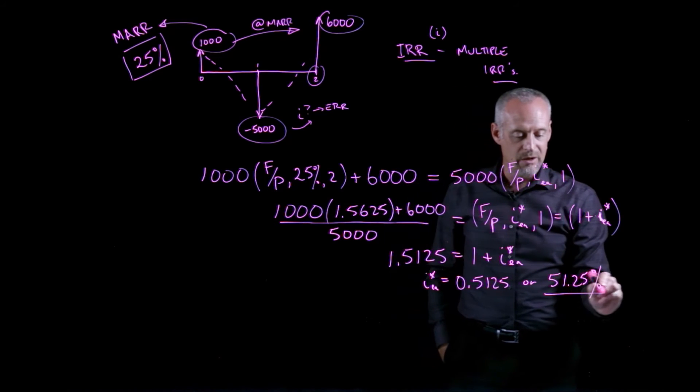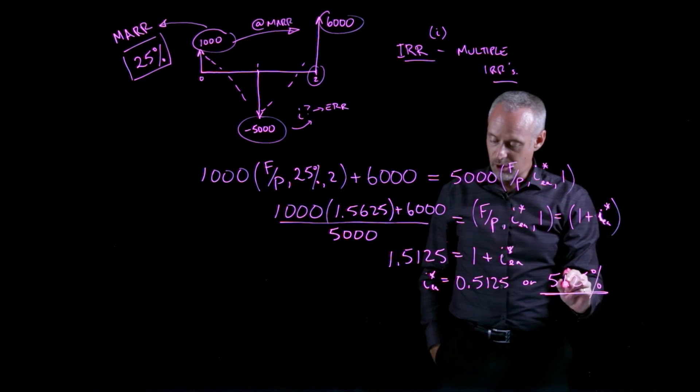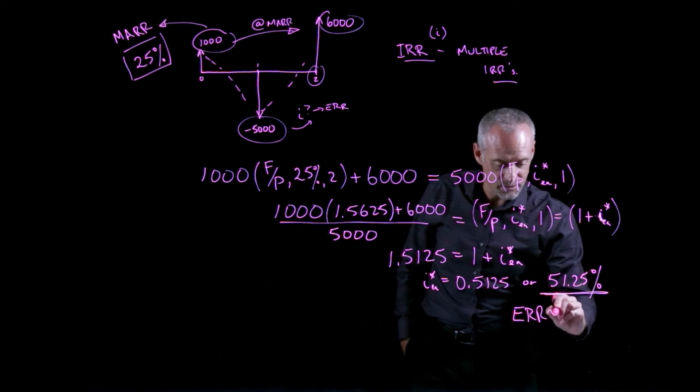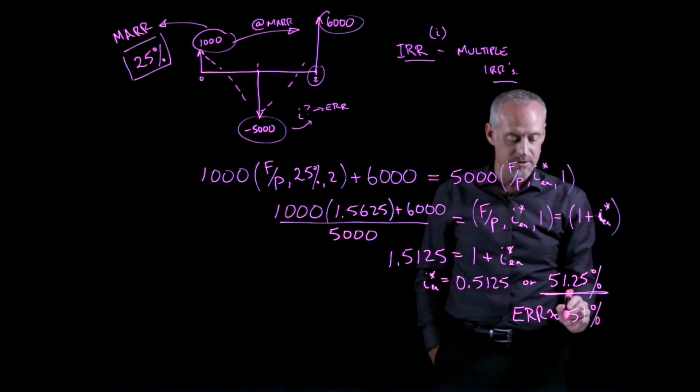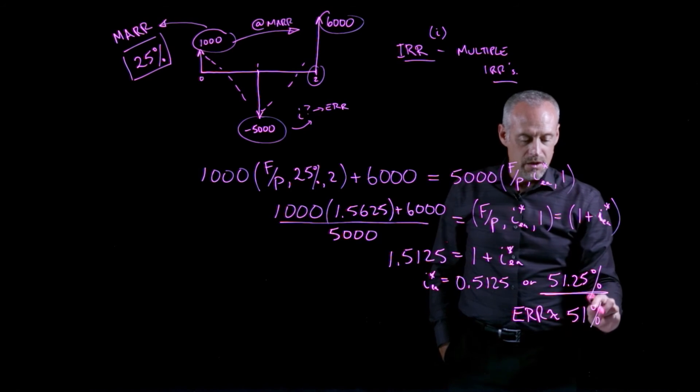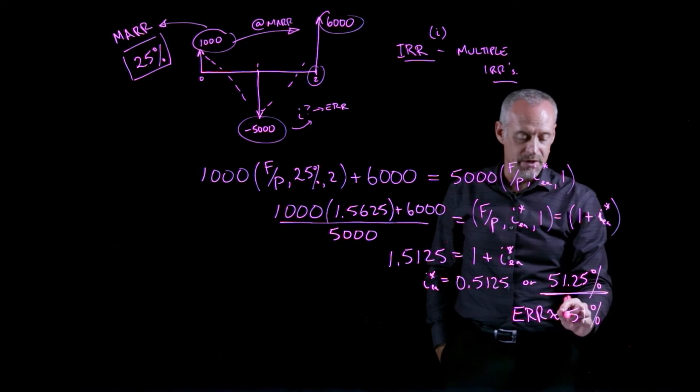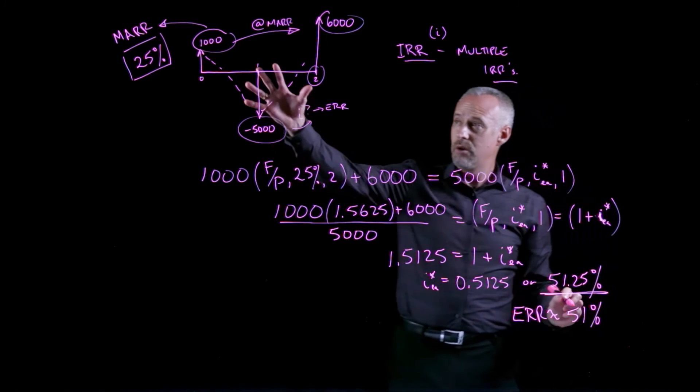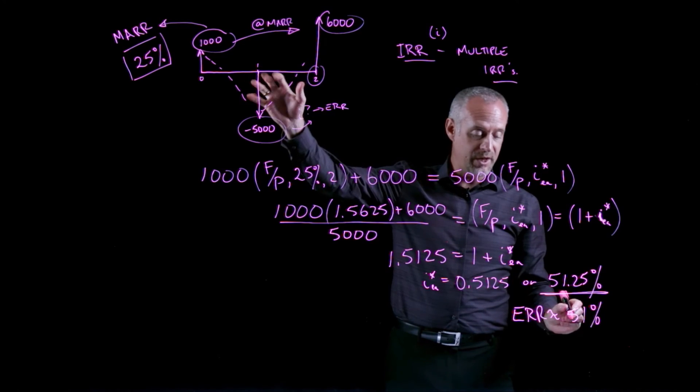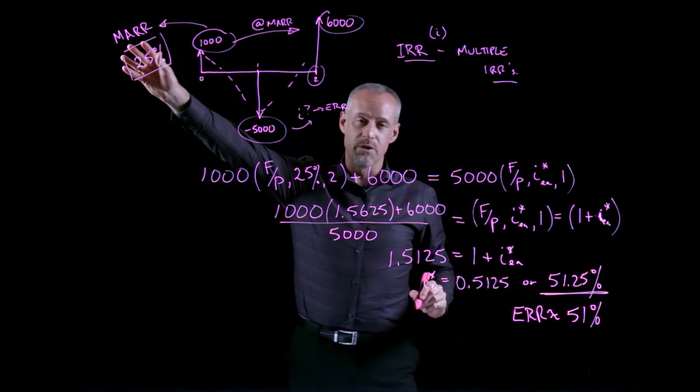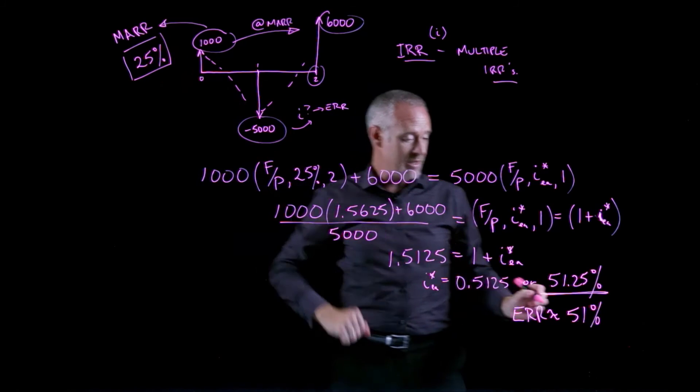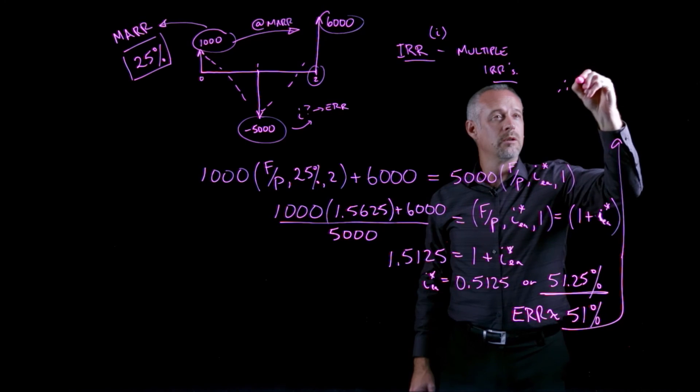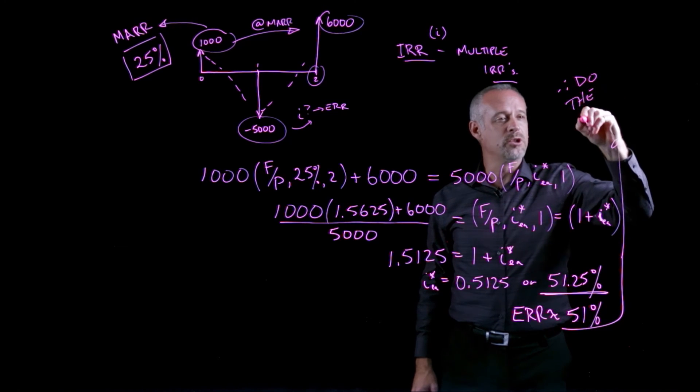If I've calculated an ERR, therefore the ERR is approximately equal to 51%. I can then compare this to the MAR. If I compare the ERR for this project of 51% to the company's MAR, which is 25%, I can easily conclude, therefore, do the project.